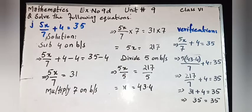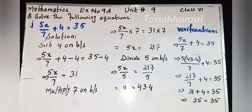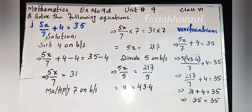Good morning. In this video I will explain Part J, Exercise 90, Unit Number 9. This question is for Class 6. Part J: 5x upon 7 plus 4 is equal to 35. The equation is given as a question.